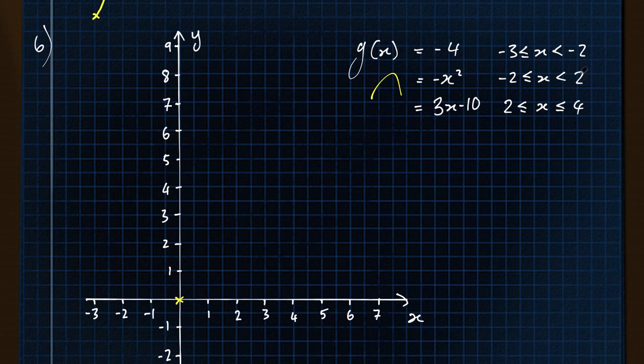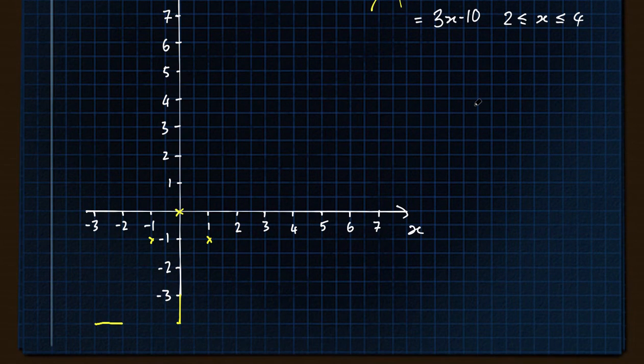When x is 0, minus x squared is also 0, so it's going to curve up to that point. If we look at some points, when x is 1, so in here, when x is 1, minus 1 squared is minus 1. The same is true when x is minus 1. So we've got these points and we know it's going to be a curve in there. At this point when x is 2, y is 3 lots of 2, so we're going to do 6 minus 10. So that's minus 4 again. And then it goes up with a gradient of 3 up until it hits the point 4 here.